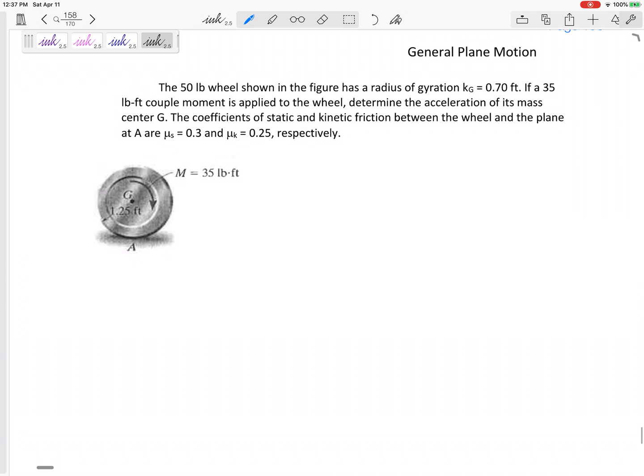All right, then one more problem, which I used to teach a lot better than this semester. I apologize. But this is like the angular equivalent of those will it slip type of problems. We've got a 50 pound wheel. We're given the rate of gyration. So with that, we could find I pretty quickly and easily. It's given a moment of 35 pound feet. And we want to find the acceleration. And they give us the static coefficient and kinetic coefficient. Because think about this. If this is a really hard moment, if you twisted this really hard, then it might slip right here. But if you just give it a nice soft twist, what's going to happen? It will roll without slipping.